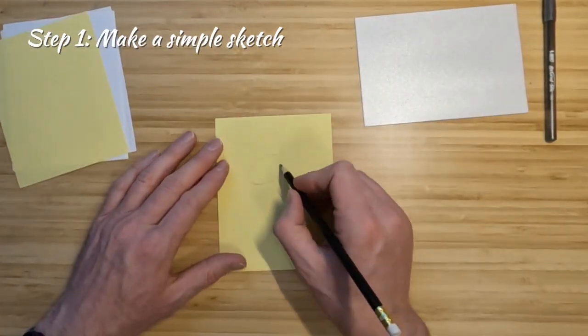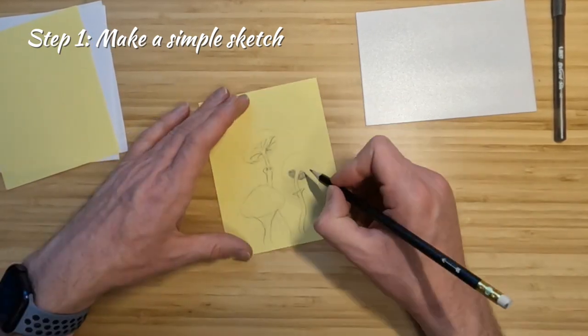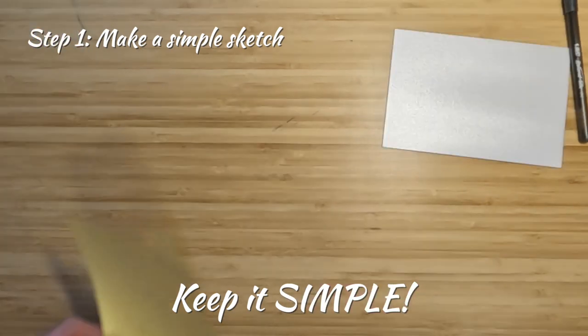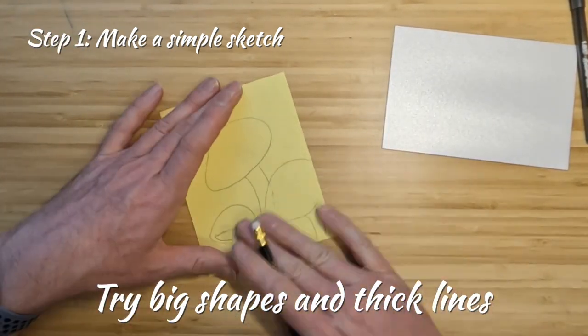We'll start by sketching something we'd see in nature using our thin paper and a pencil. Try to keep this sketch simple because lots of detail can get confusing after printing. Try using big shapes and a few thick lines.